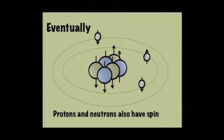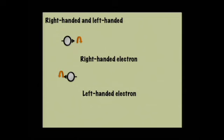Eventually we realized that not only did electrons have spin, but so did the protons and so did the neutrons, and that spin also meant that they had magnetic fields. So now we have electrons with spin, protons with spin, and neutrons with spin. It turns out that when particles have spin, especially when they're moving fast, we can talk about them as being either right-handed or left-handed.